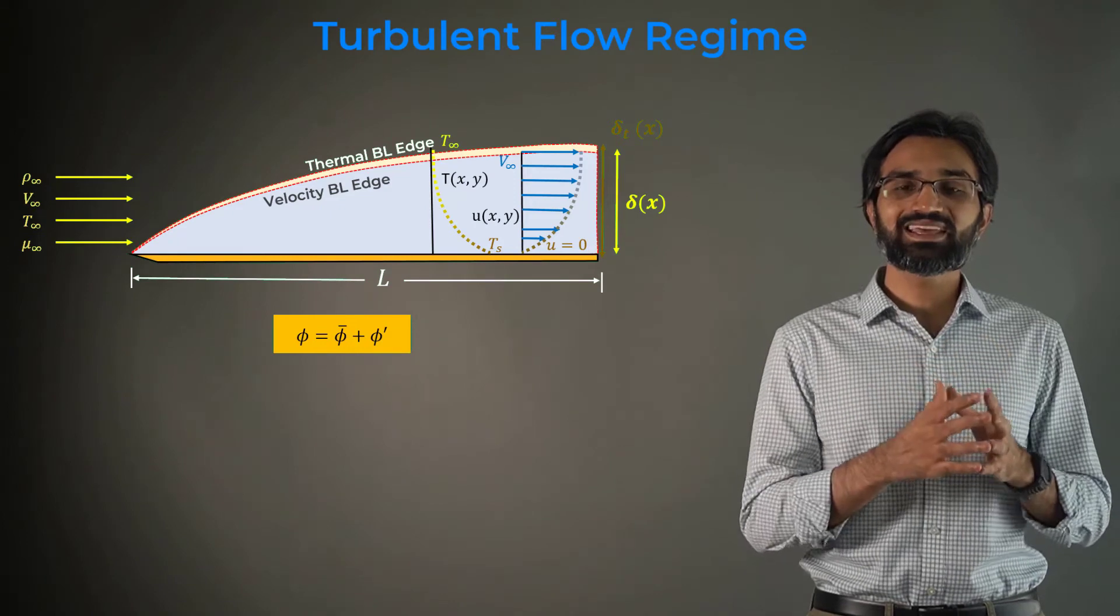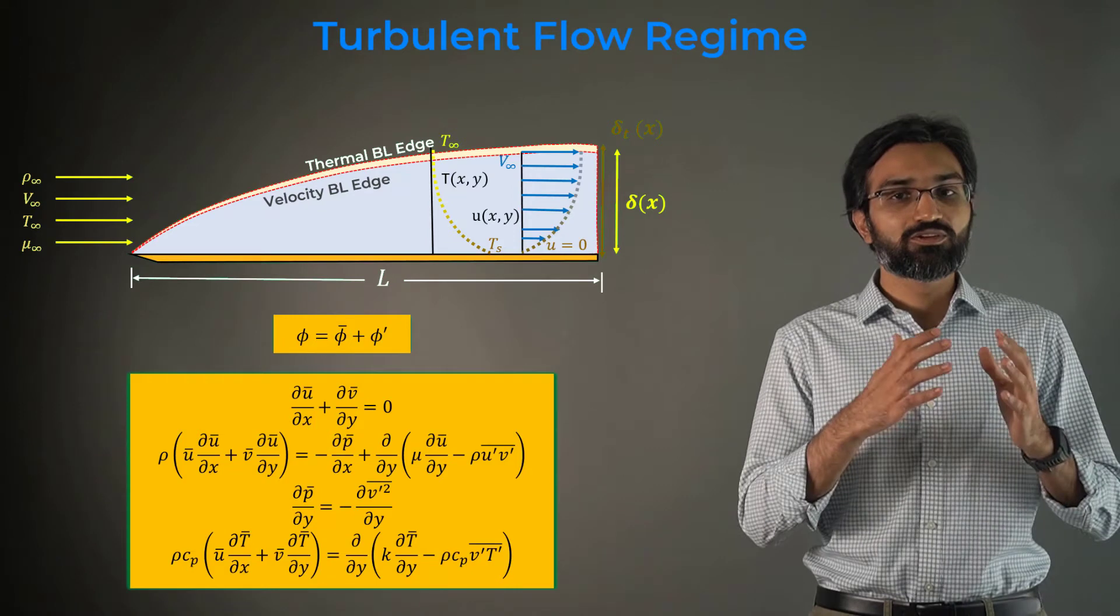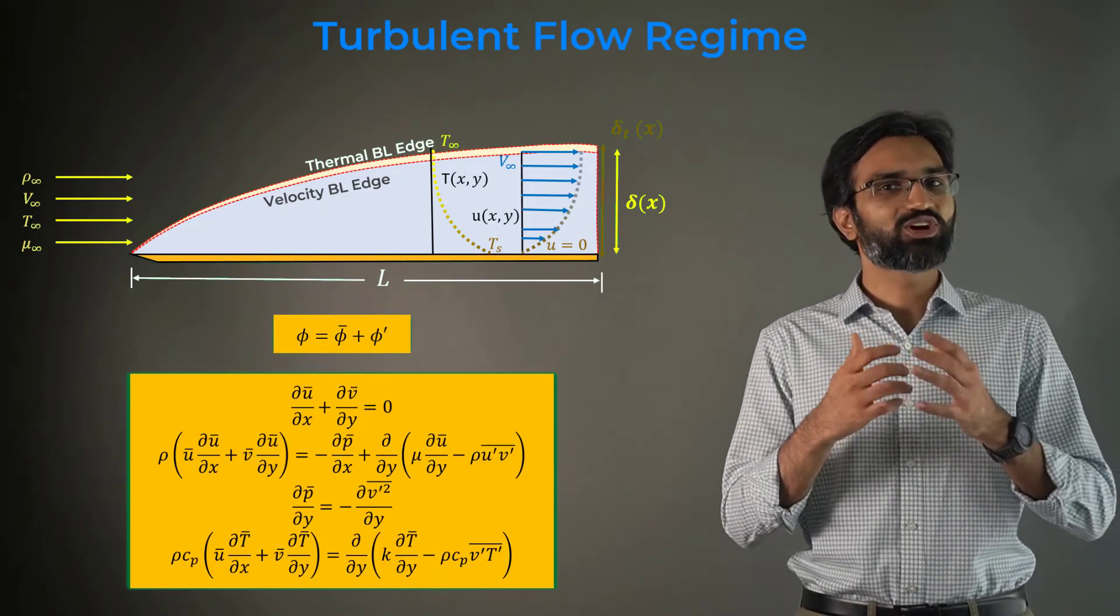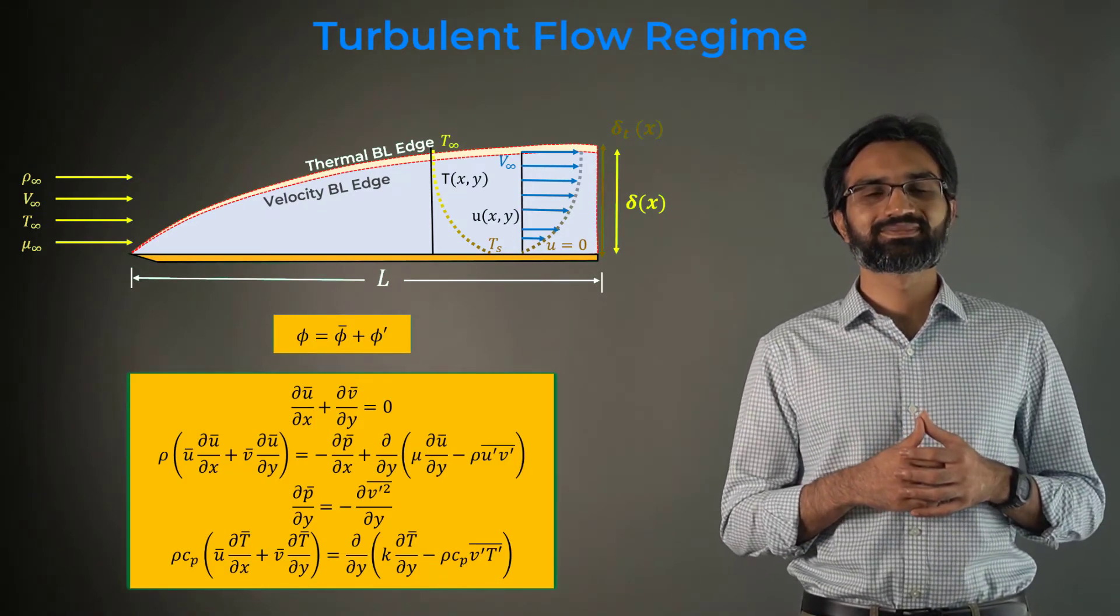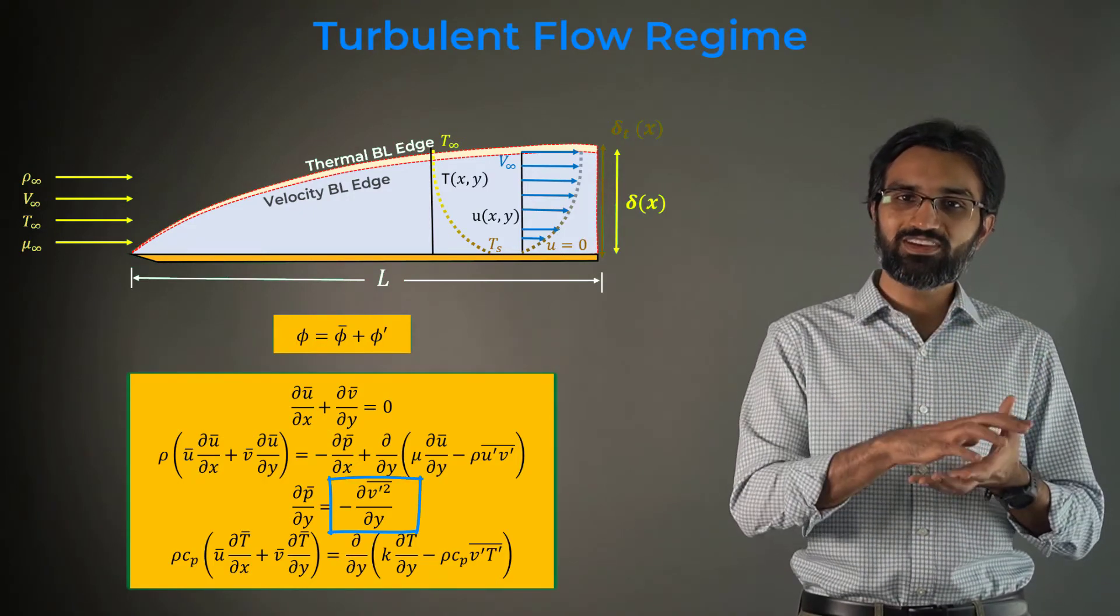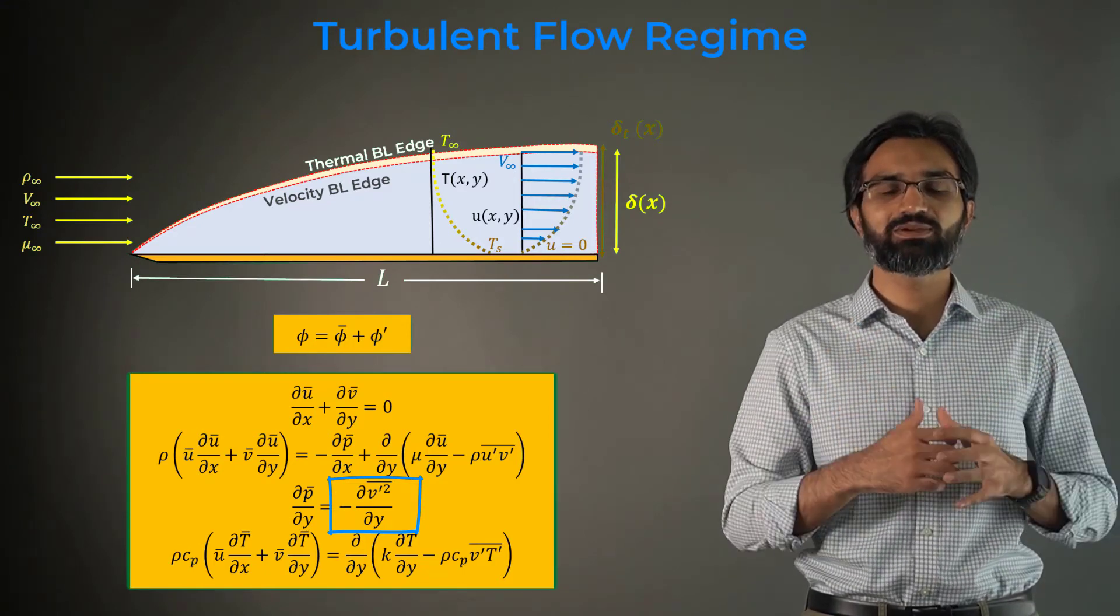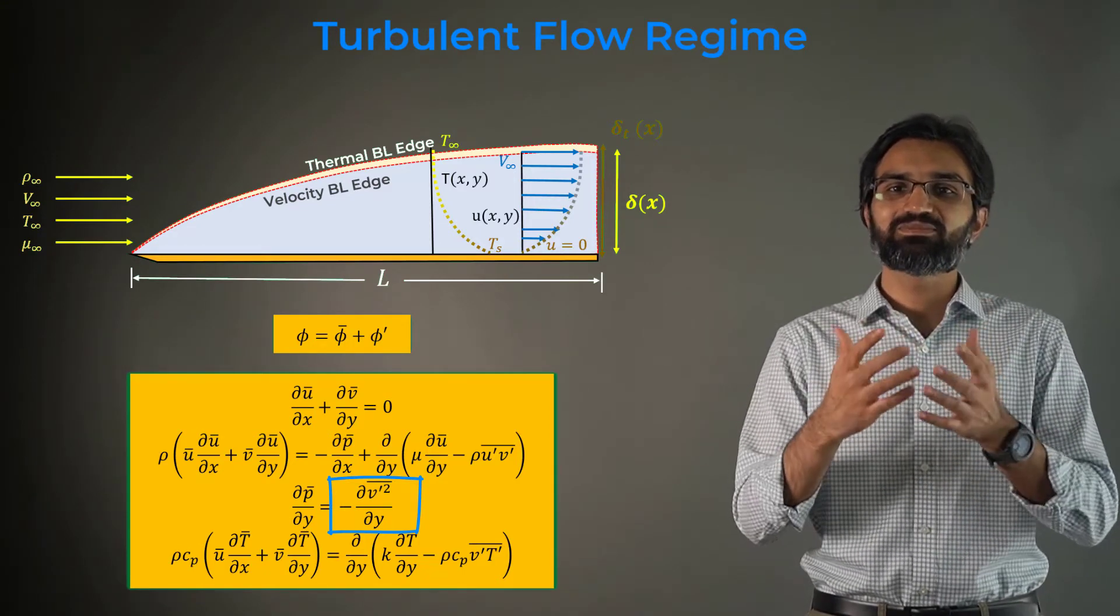We apply the classic Reynolds averaging technique and obtain the following governing equations for an incompressible fluid with constant properties. The highlighted term in the y-momentum equation is almost always small across the boundary layer compared to the freestream dynamic pressure and can be neglected.